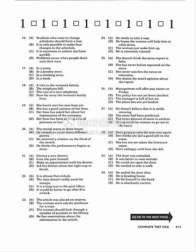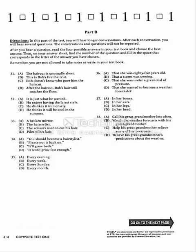Part B, page 518. Directions. In this part of the test, you will hear longer conversations. After each conversation, you will hear several questions. The conversations and questions will not be repeated. After you hear a question, read the four possible answers in your test book and choose the best answer. Then on your answer sheet, find the number of the question and fill in the space that corresponds to the letter of the answer you have chosen. Remember, you are not allowed to take notes or write in your test book.